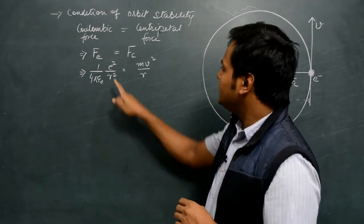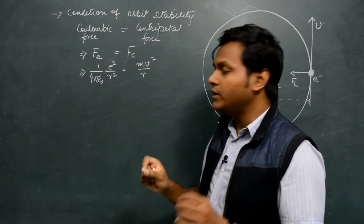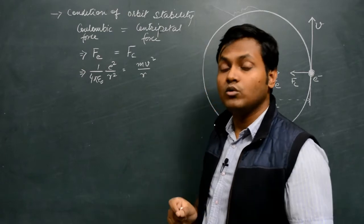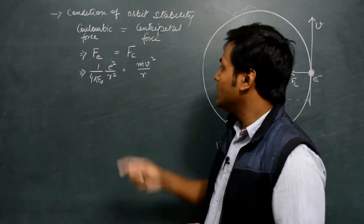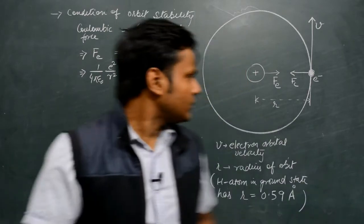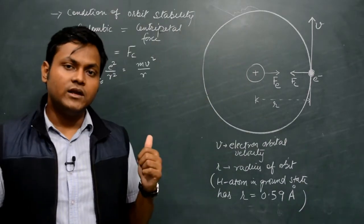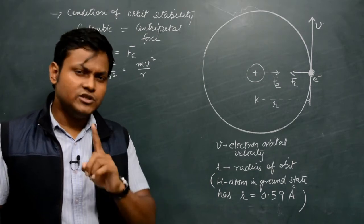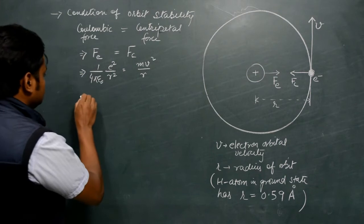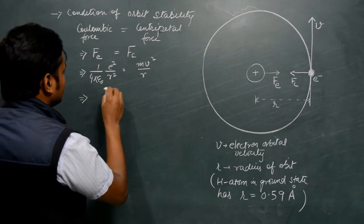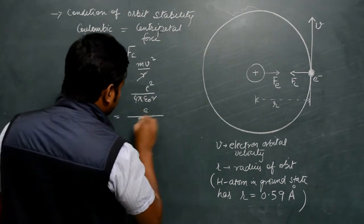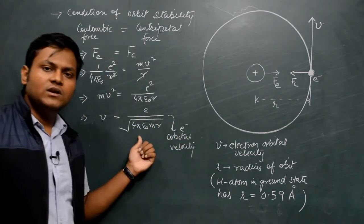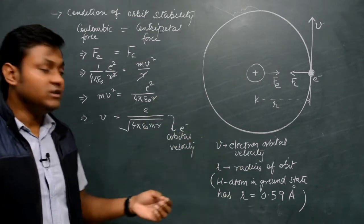Here e is the electronic charge, r is the radius of the particular orbit, and v is the orbital velocity with which the electron is revolving. m is the mass of the electron. From this equation I want to obtain an expression for the velocity of the electron — and why we need the velocity will become clear in a second. This gives us an expression for the orbital velocity of the electron as it revolves around the nucleus.